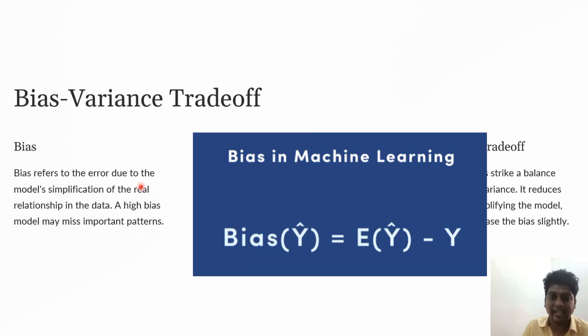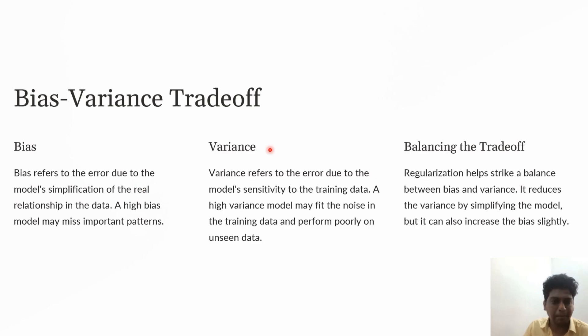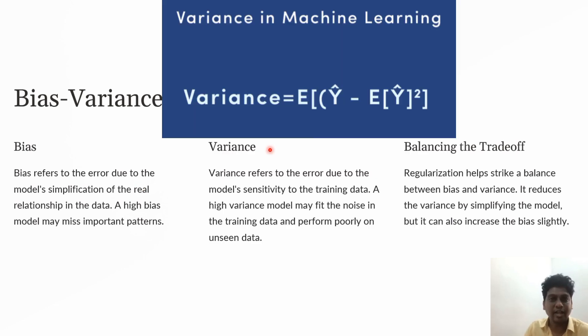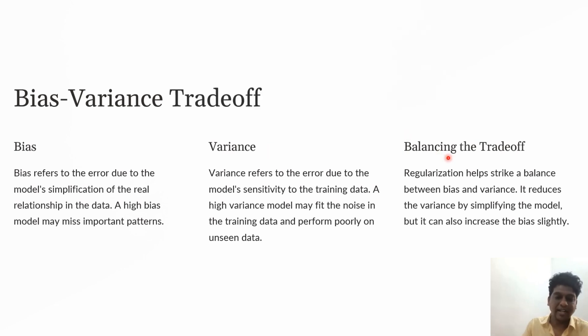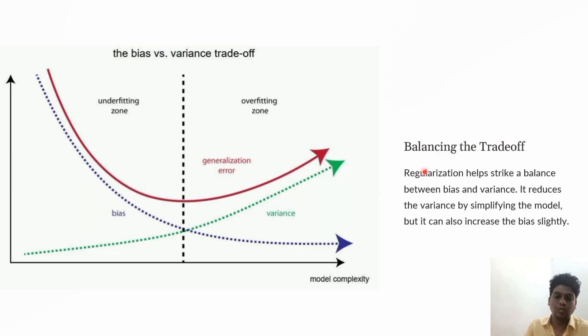Bias refers to errors when fitting a statistical model to real-world data that doesn't fit perfectly. Variance is the error when making predictions using data not previously seen in the model. High variance occurs when the model learns noise in the data. We should find proper balance—the bias-variance tradeoff—to prevent overfitting.